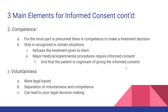The second element is competence. For the most part, it is presumed there is competence to make a treatment decision. It is only formally recognized in certain situations — if the patient refuses the treatment prescribed by the clinician, or if there is a major medical or experimental procedure that requires informed consent, with the patient actively consenting to what may happen and demonstrating they are cognizant of giving that informed consent.